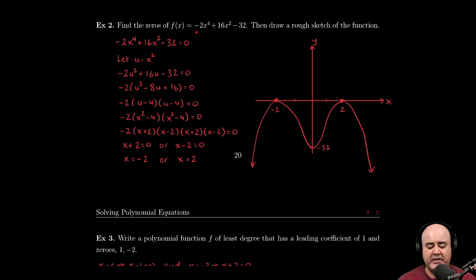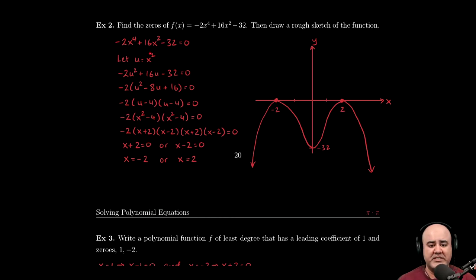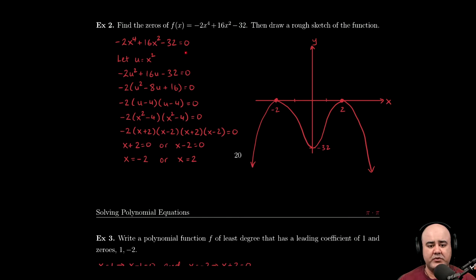So we start by rewriting our equation, negative 2x to the fourth plus 16x squared minus 32 equals zero. We need to always make sure before we solve polynomial equations that one side of the equation is zero. It is in this case.